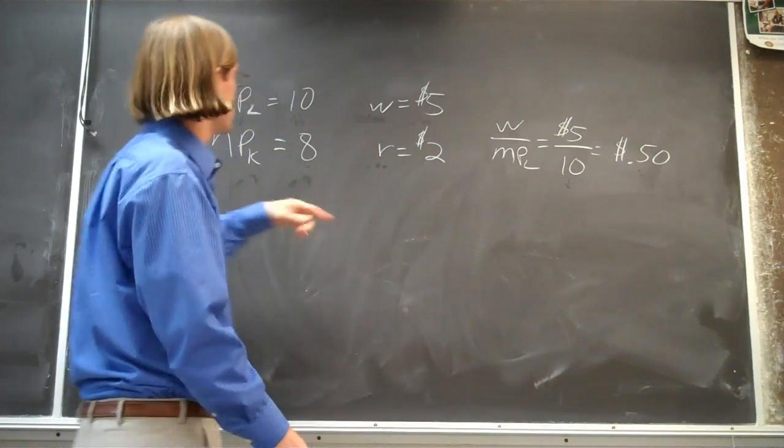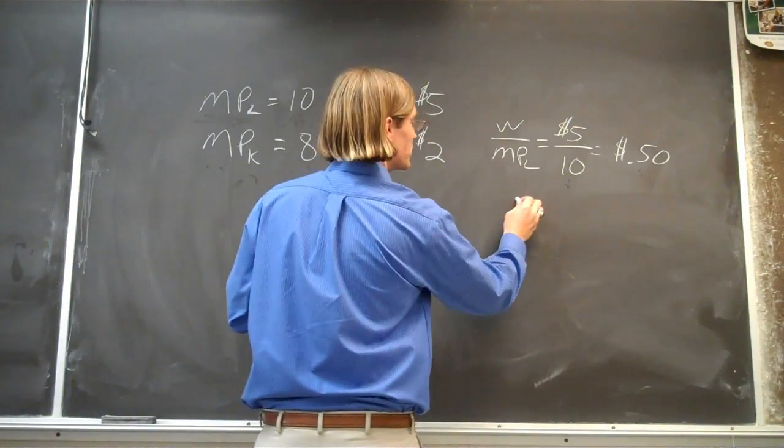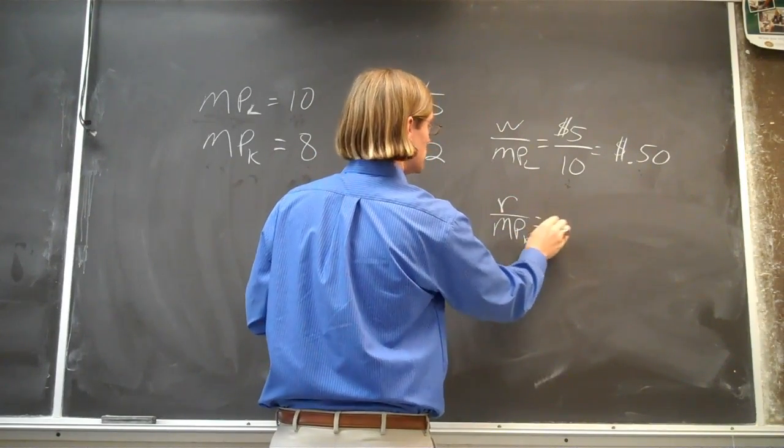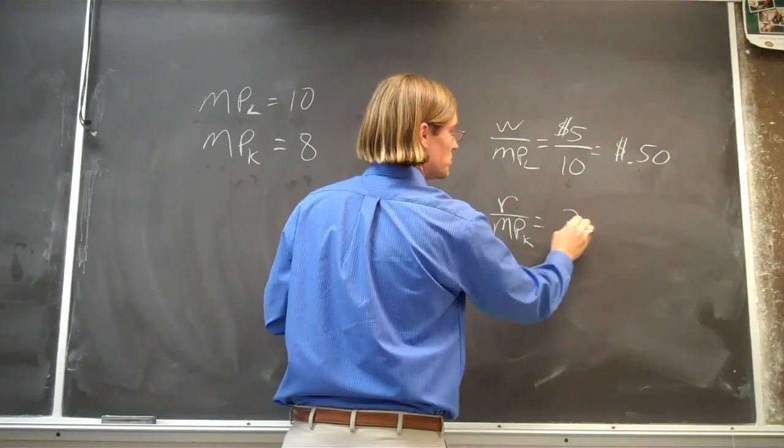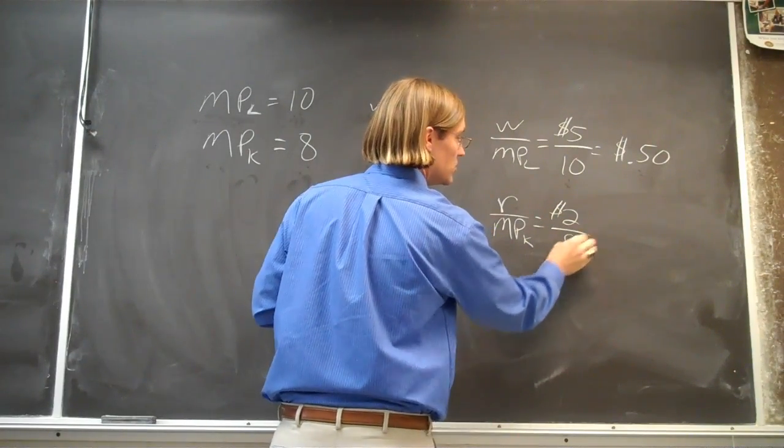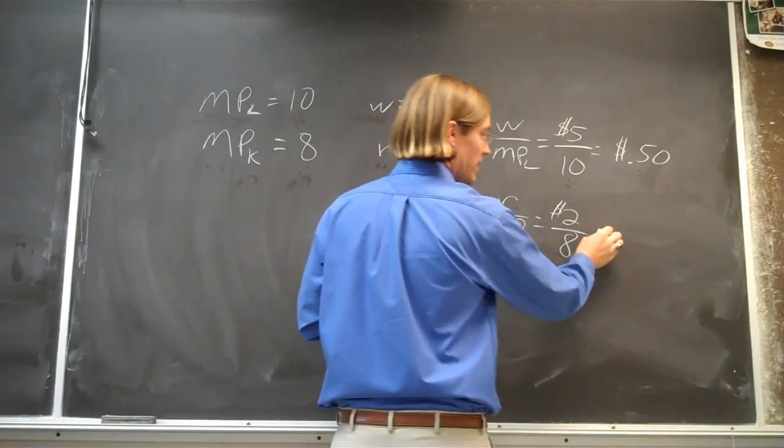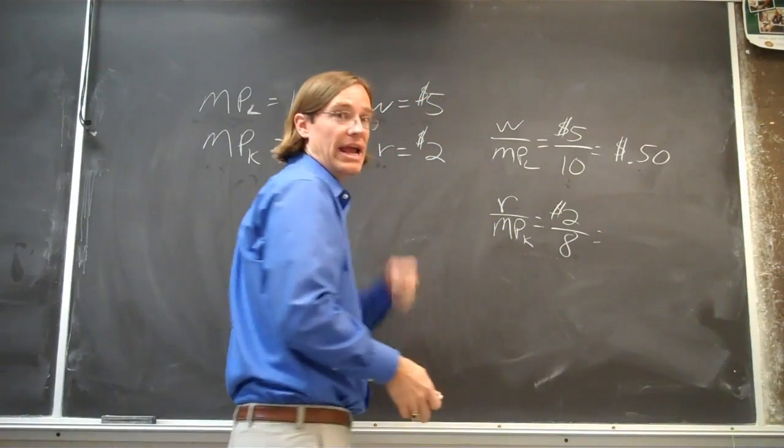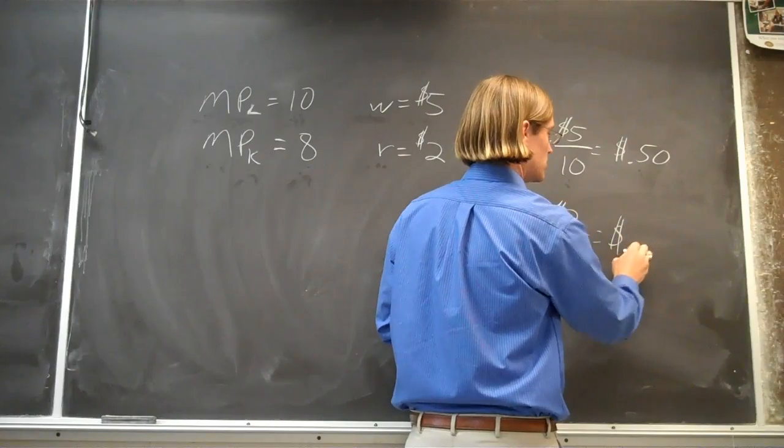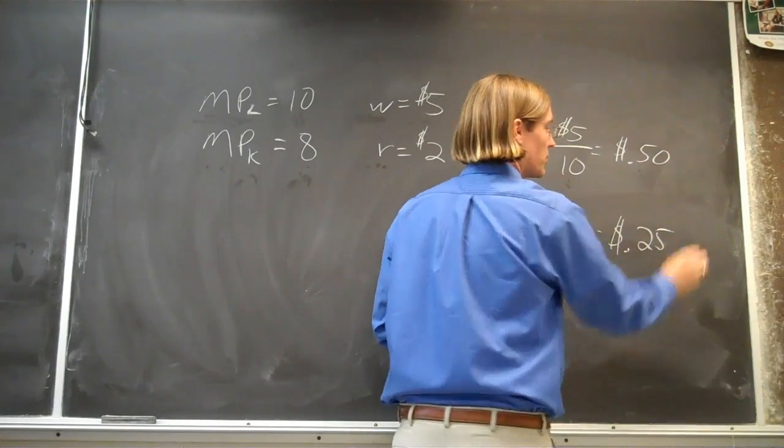If we were to do the same thing, divide the rental rate by the marginal product of capital, that says we're going to spend two bucks and we're going to get eight units of output. And so that last unit, that eighth unit of output, cost us 25 cents.